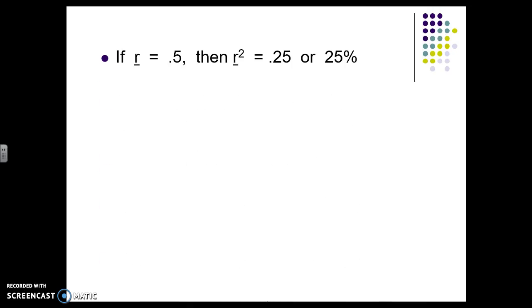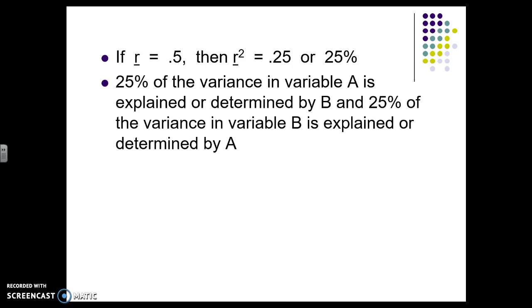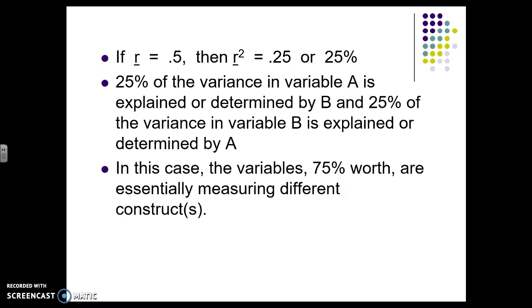If I have an R of 0.5, 0.5 is a moderate relationship. It's also positive. Our R squared would be 0.25 or 25 percent, in which case 25 percent of A is explained by B. Or you could say it the other way. Meaning, in this case, 75 percent of the variance in the two circles are not overlapping. We're only overlapping 25 percent, so 75 percent are different constructs.